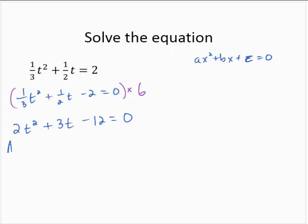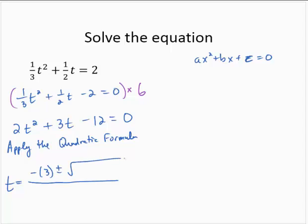Now, I'm going to apply the quadratic formula. So then t would equal the opposite of b plus or minus the square root of b squared minus 4ac over 2a.